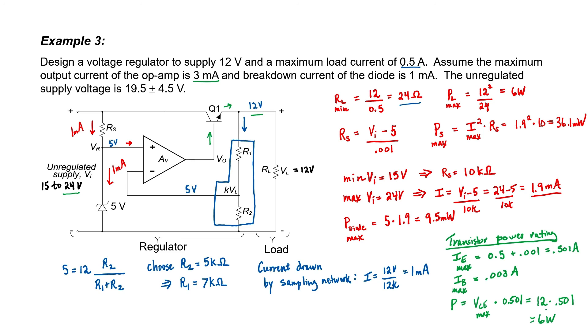But what happens if something goes wrong — for example, if somebody replaces the load resistor with a short circuit? In that case, we would have 0 volts at the output rather than 12, and 24 volts across our transistor. The transistor would then need to dissipate about 12 watts or more in order to not burn up. We're assuming here that the transistor's emitter current is limited by the base current available, but since beta can vary, we really ought to add overcurrent protection — we'll do that in the next video. For safety reasons, when designing this voltage regulator, the transistor should have a power rating of 12 watts rather than 6 watts.